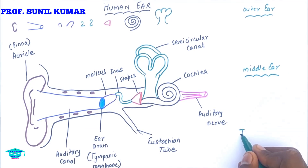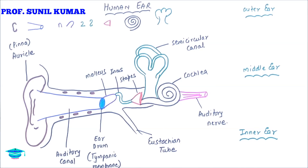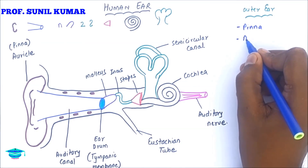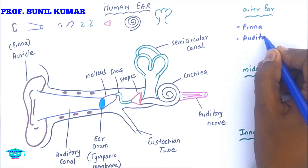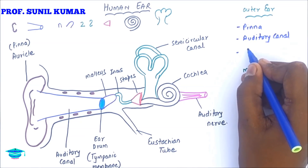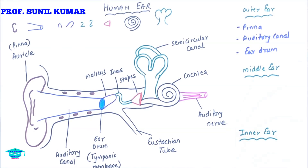The ear is divided into three parts: outer ear, middle ear, and inner ear. The outer ear is made up of the pinna (auricle), whose function is collection of sound; the auditory canal, which transfers sound to the ear drum; and the ear drum (tympanic membrane), which vibrates and converts sound into impulses.